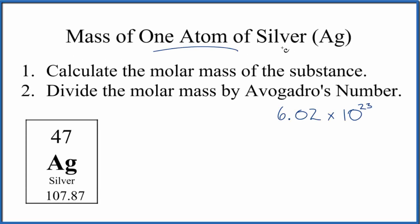Let's find the mass of one atom of silver. That's Ag. And really all we're going to do is we're going to take the molar mass of the substance. In this case, it's the atomic mass because it's just an atom. It's the average atomic mass. And we're just going to divide that by Avogadro's number. That'll give us the mass of one atom of silver.